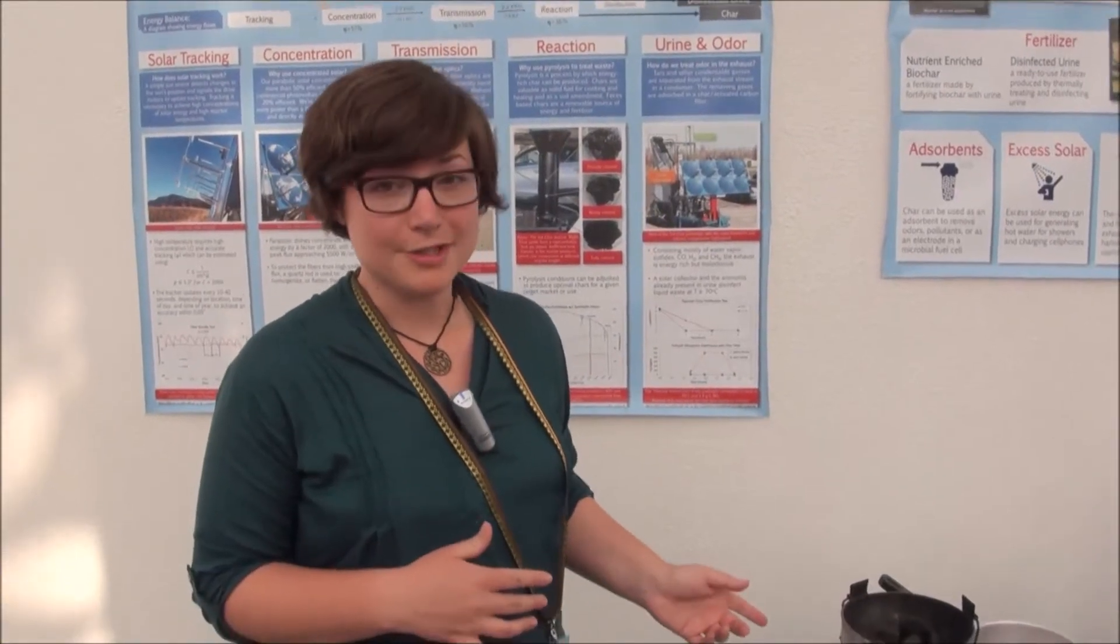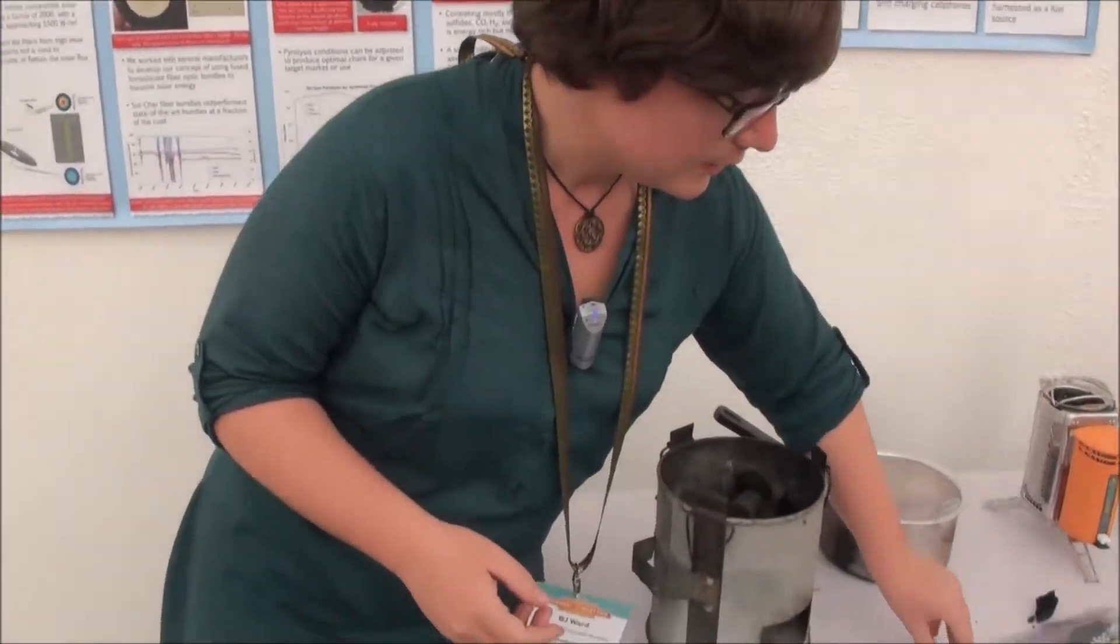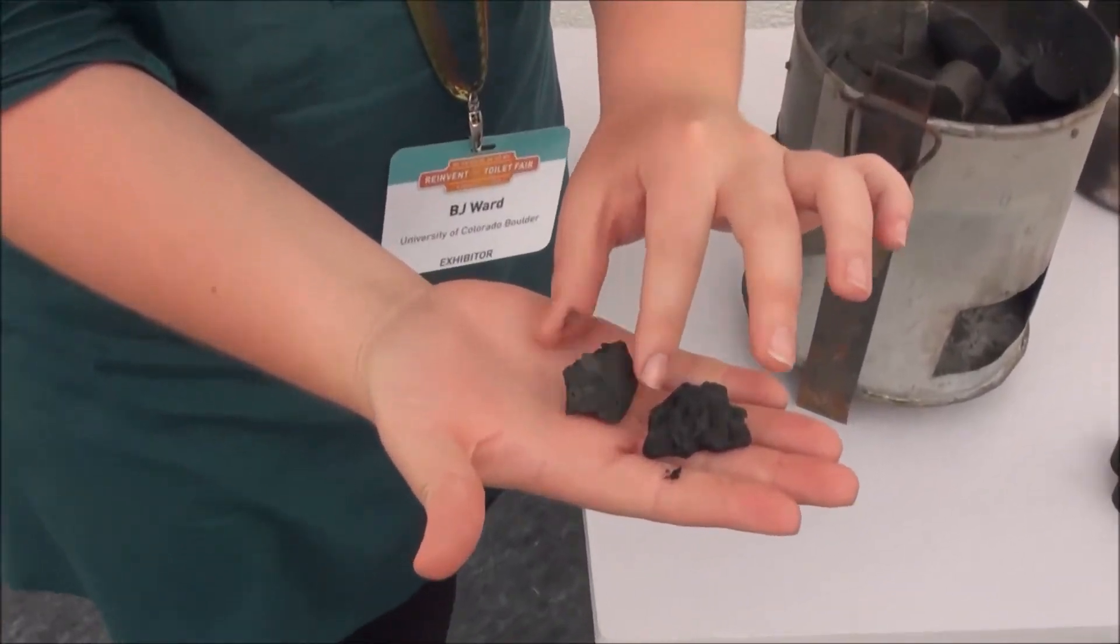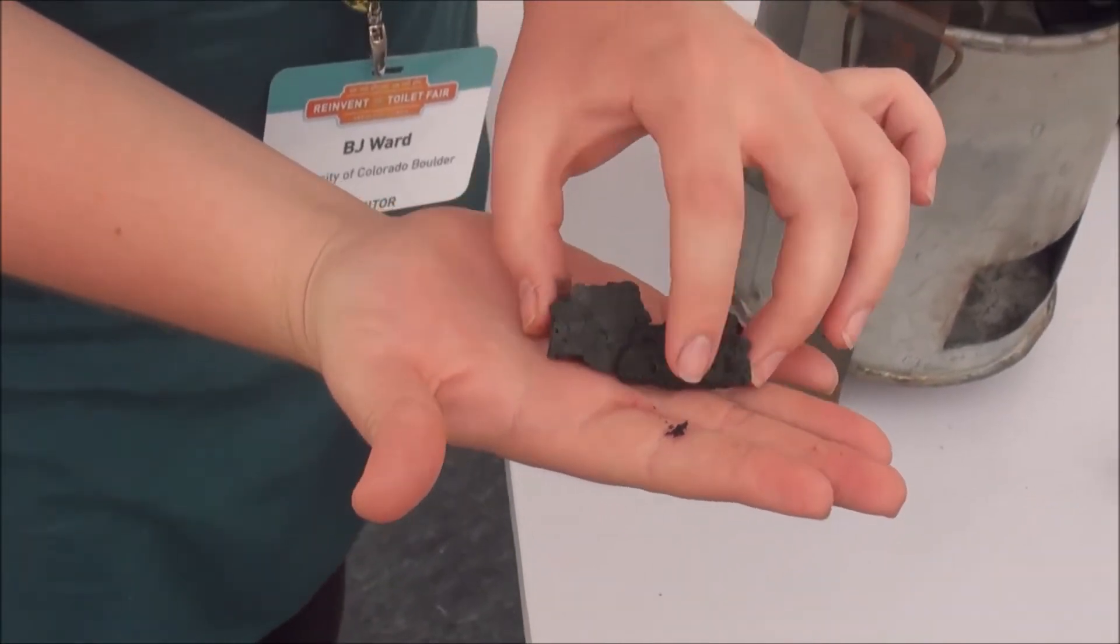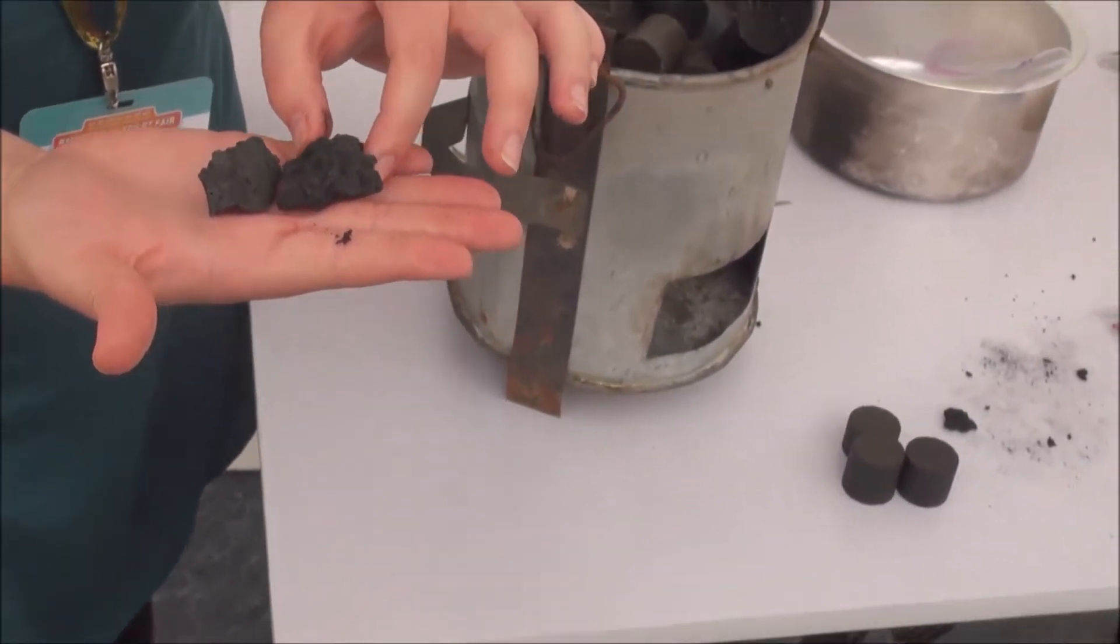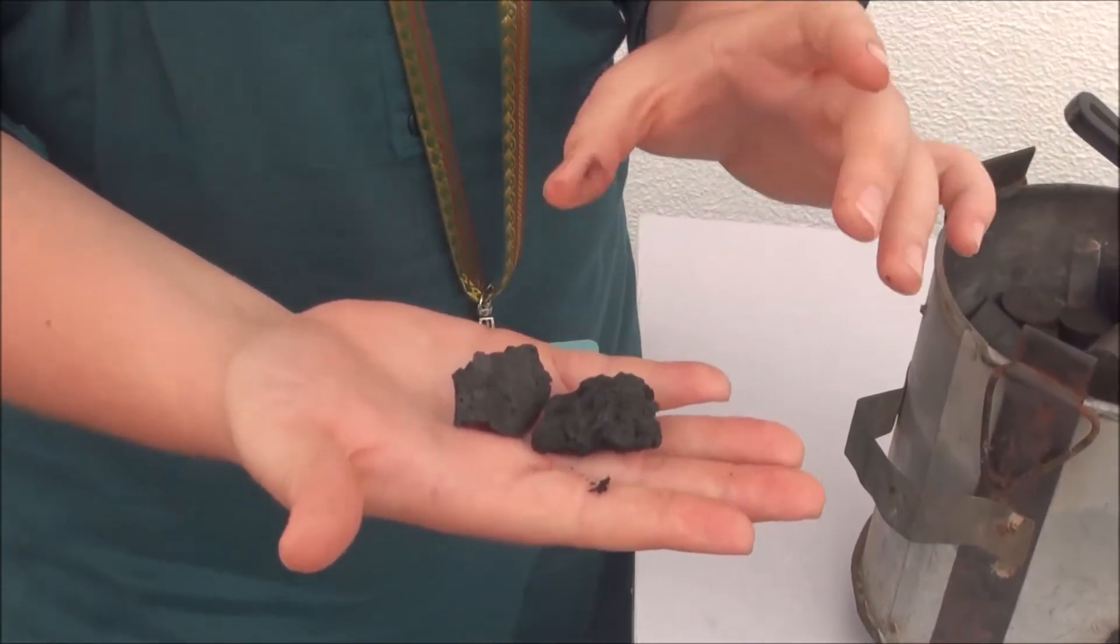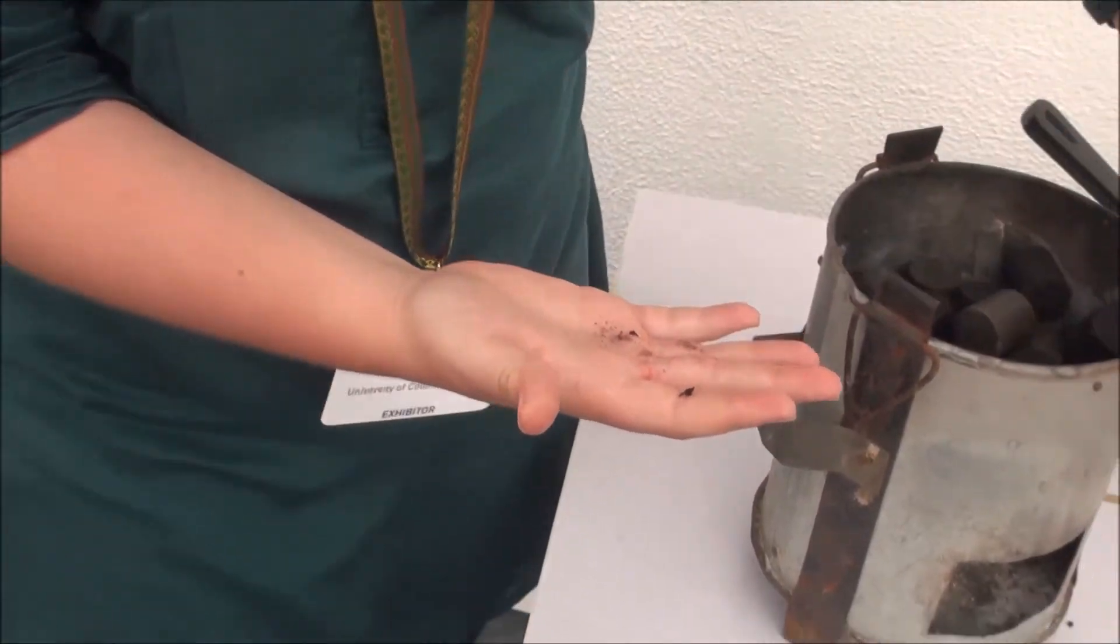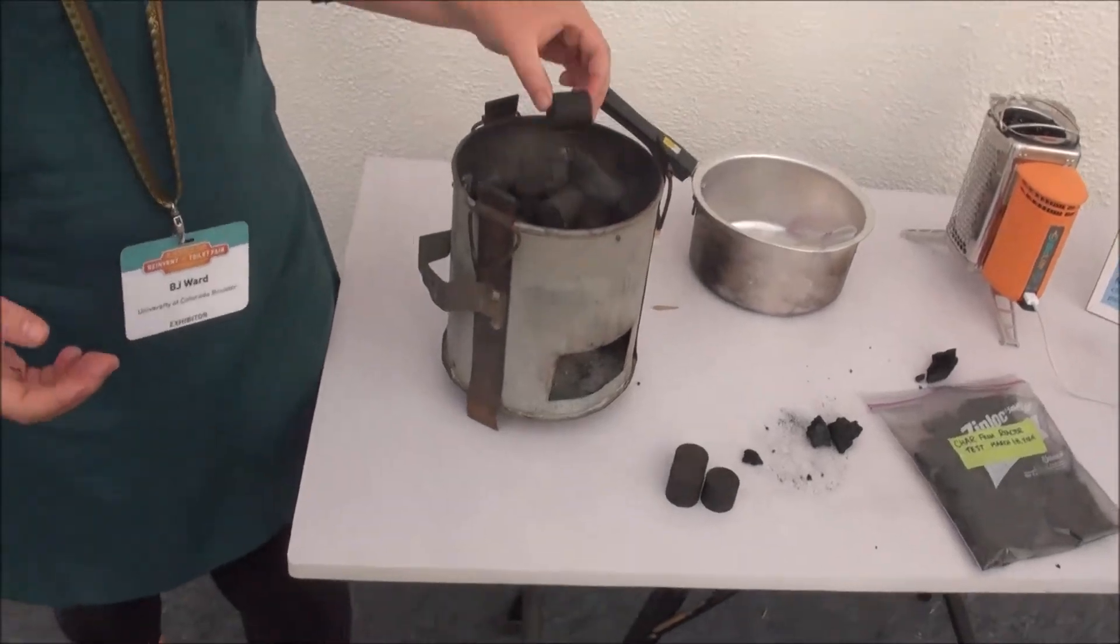The Solchar sanitation process generates char as a useful byproduct. This is some char we've made at the fair from the simulant provided to us. We make it at about 300 Celsius in limited oxygen. We've been investigating using it both as an agricultural amendment because it has good nutrients like nitrogen for adding to soil, and we've also been looking at its energy content for potentially using it as a solid fuel.